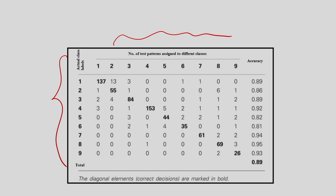Here the diagonal entries show high values — 137, 55 — which are the true positives. From this, class 1 is recognized as 1 about 137 times and class 2 is recognized as 2 about 55 times. These are the correct decisions, and from them you can determine the percentage accuracy. Values like 13 and 3 are false negatives, from which you can determine the misclassification rate.